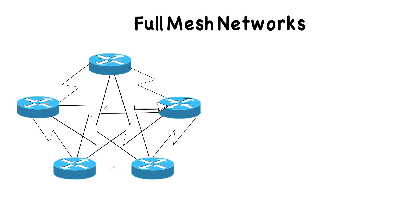As we see in this example on screen, if I've got five different sites, it's going to take 10 interconnections to fully mesh those sites. Remember the formula: N times N minus one divided by two. N is the number of sites, so five times five minus one is five times four, which is 20 divided by two — that's 10. Ten links to fully mesh five sites.